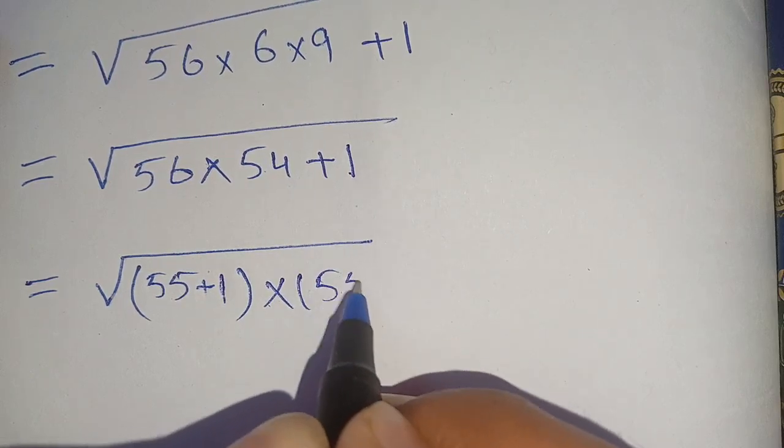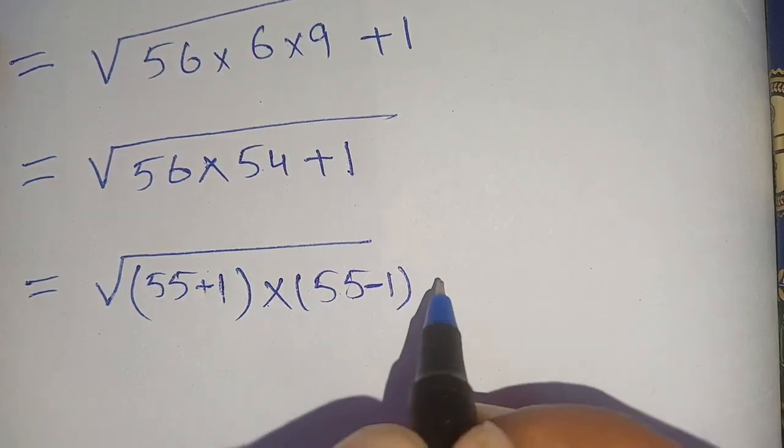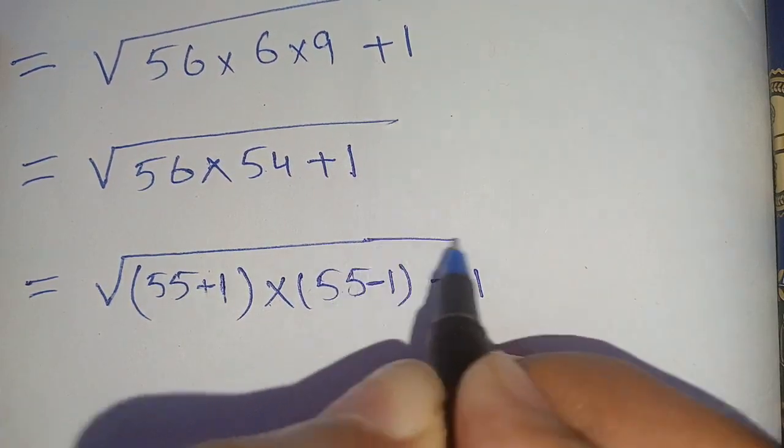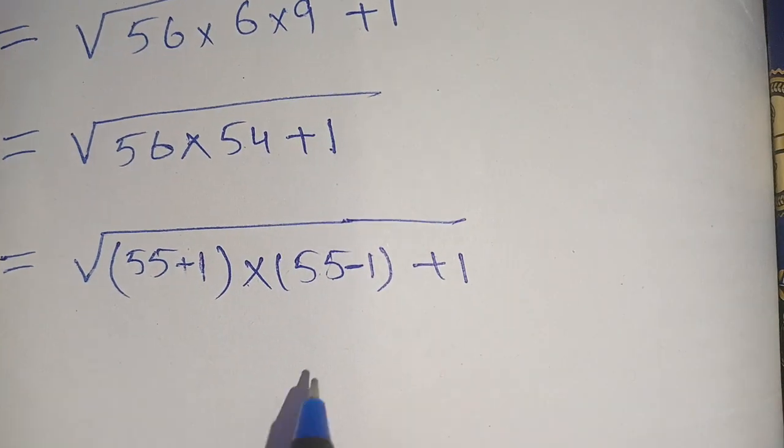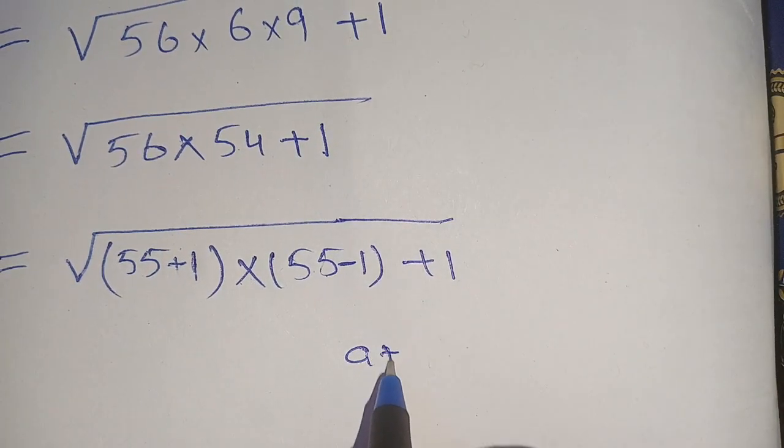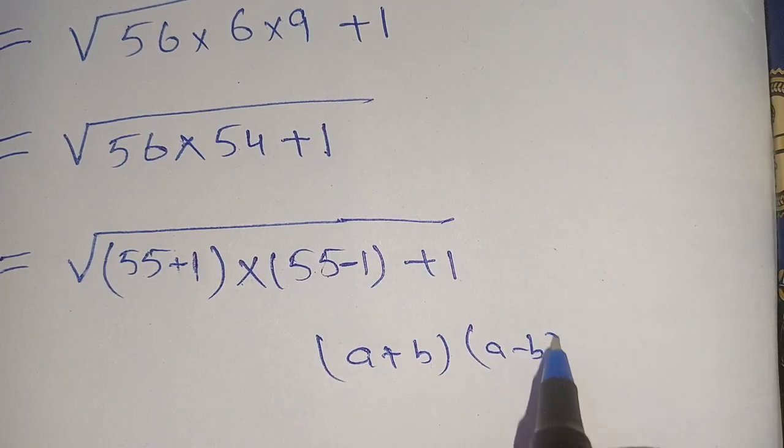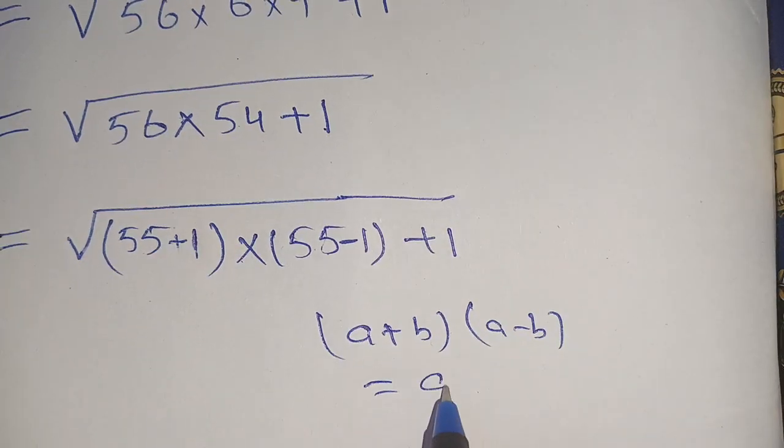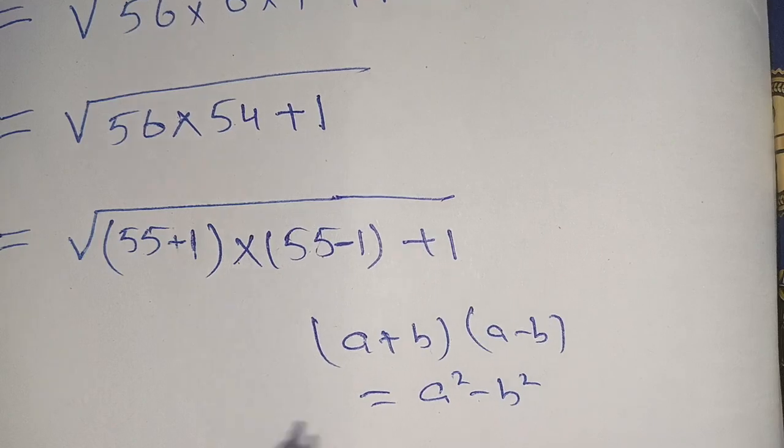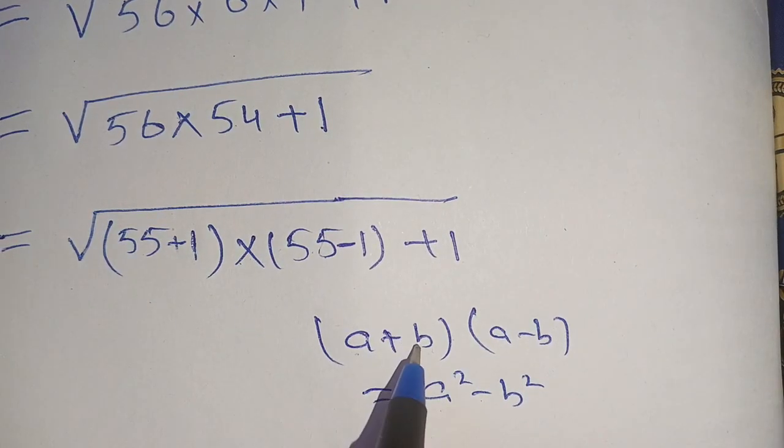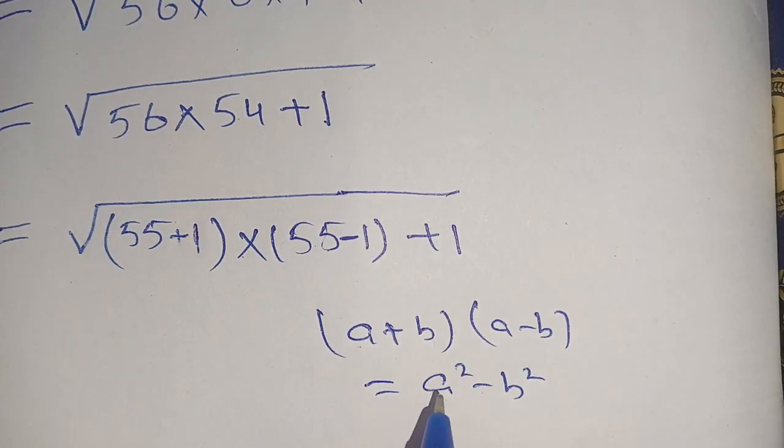Now we know that a plus b times a minus b is equal to a squared minus b squared. Here a is 55 and b is 1. Using this identity we get square root of 55 squared minus 1 squared plus 1.